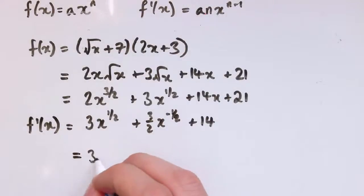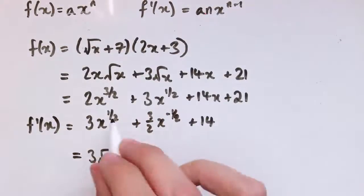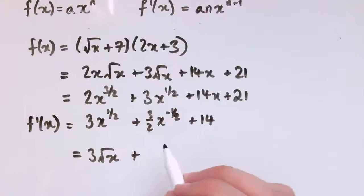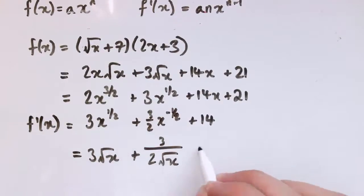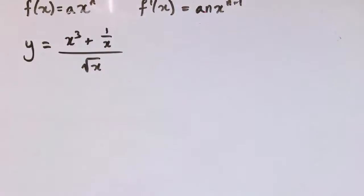So that's that. And again, we could, if we wanted to, write this using indices as 3√x plus 3 divided by 2 times the square root of x plus 14. And there we go, that's our final answer. Either of these two I think will be fine.